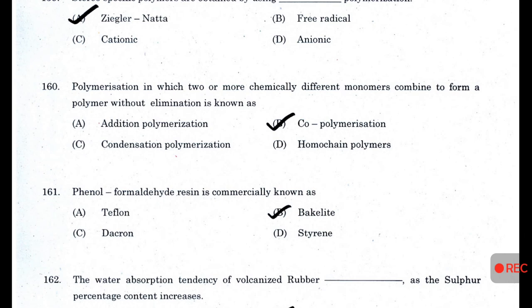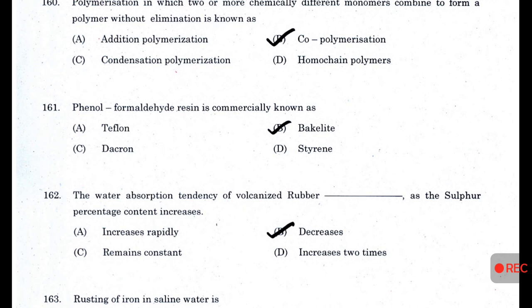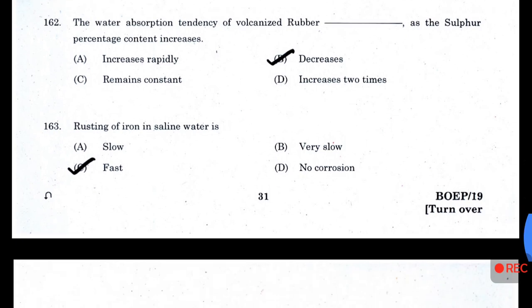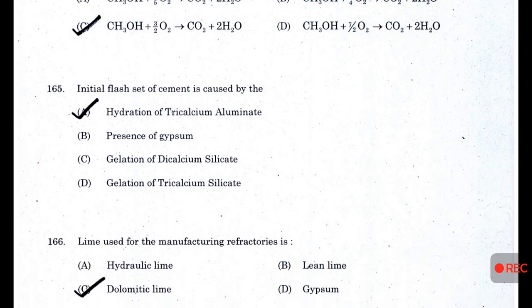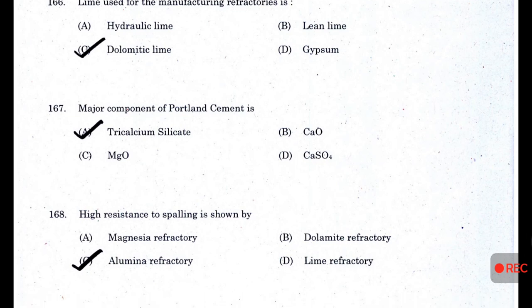Water containing magnesium bicarbonate and calcium chloride is both temporary and permanent hard water. Stereospecific polymers are obtained by using Ziegler-Natta polymerization. Polymerization in which two or more chemically different monomers combine to form a polymer without elimination is known as copolymerization. Phenol-formaldehyde resin is commercially known as Bakelite. The water absorption tendency of vulcanized rubber decreases as the sulfur percentage increases. Rusting of iron in saline water is fast.